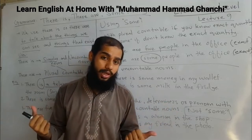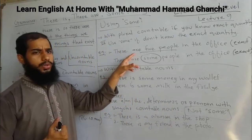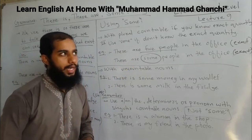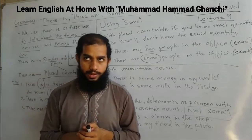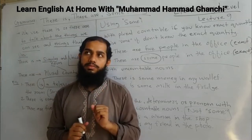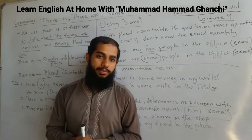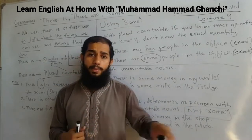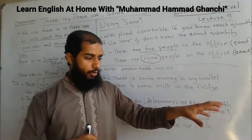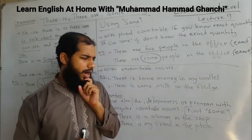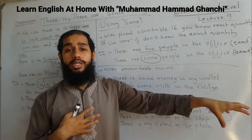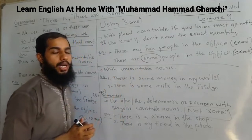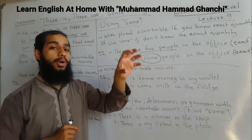One more example: 'There are ten notebooks in my bag' — you know the exact quantity, so no 'some.' But 'There are some notebooks in the bag' — when you don't know the exact number. Notebooks are countable but plural, so you use 'some' for unknown quantity.